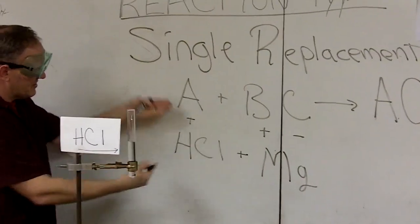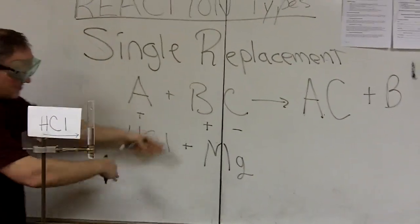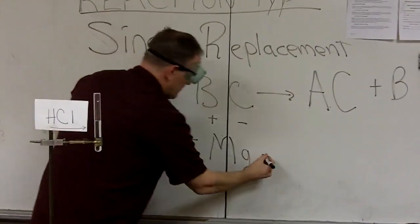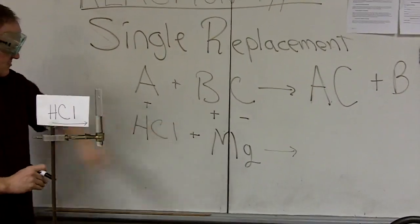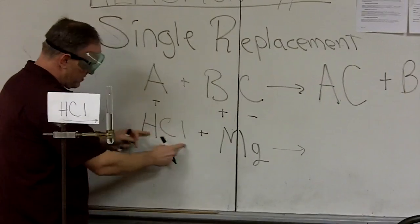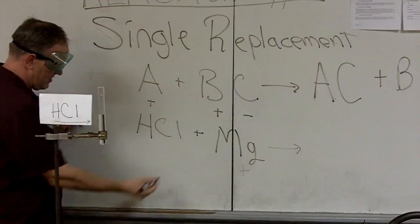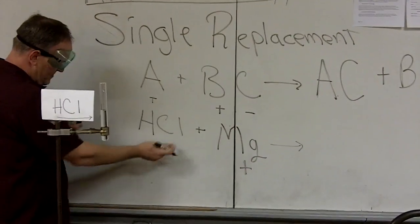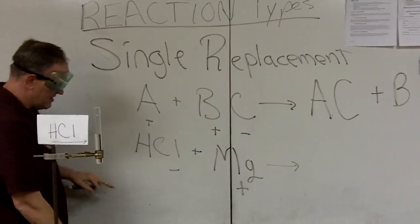So I've kind of flipped them here. Here we had the element by itself with the compound couple. Now I've kind of flipped it. The order that you write them in the reaction doesn't matter. So what's going to happen as this proceeds is the element has to leave with one of these two. And as we know, magnesium forms a positive ion. And therefore, it's going to have to leave with the negative thing. The negative thing of these two would be chloride. That would leave hydrogen by itself.